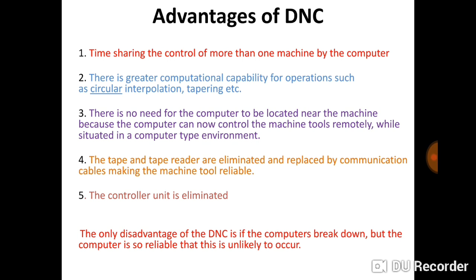There is no need for the computer to be located near the machine, because it can control the machine tools remotely while situated in a suitable computer-type environment. In DNC, the centralized computer system is located remotely, away from the shop floor. You do not need to carry the controller to the shop floor, where the environment is dusty with fumes that could affect the controller. In CNC, a separate controller is attached to each machine, whereas in DNC the controlling computer is situated away from the shop floor in a suitable environment.